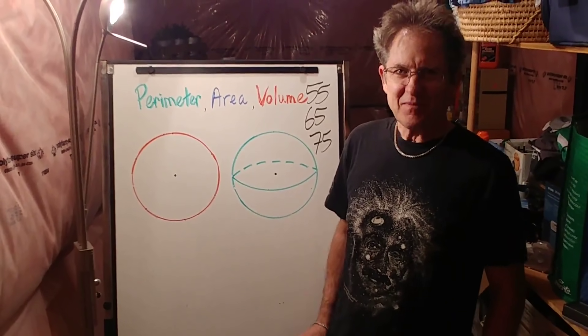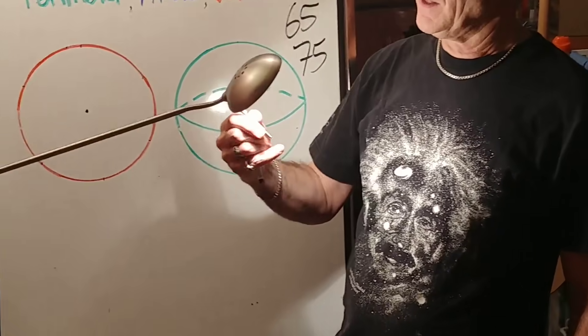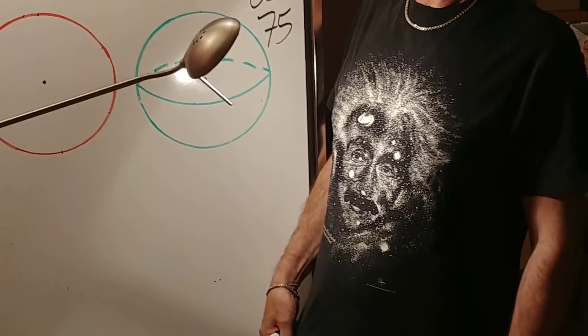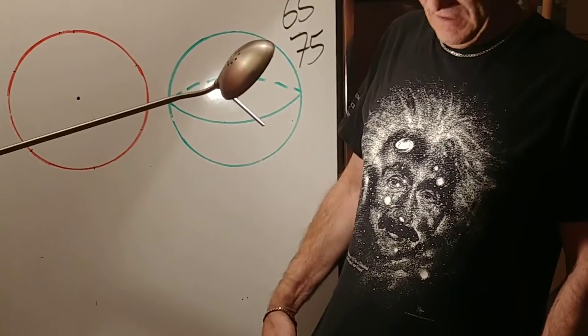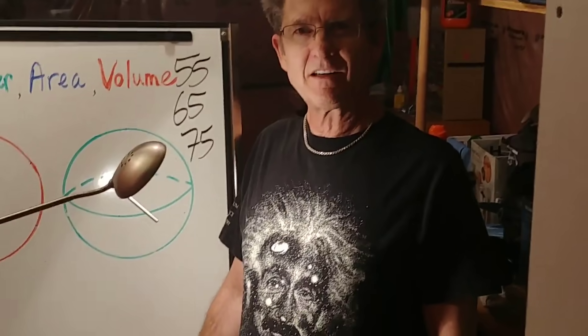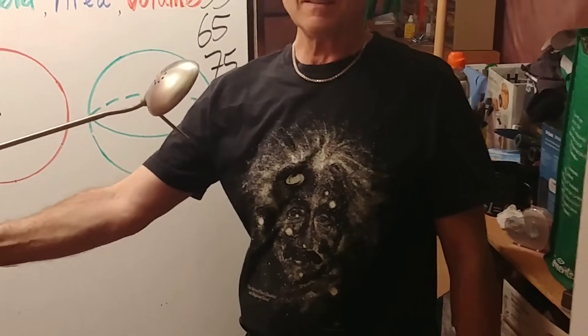Now this t-shirt is special because it glows in the dark. Let's see if I can demonstrate that to you. So I'll put lots of light on it here. You'll notice the shirt is made up of interstellar dust, stars, and galaxies. And when we turn the lights off, hopefully you can see Einstein glowing in the dark, which is why we're in the basement.